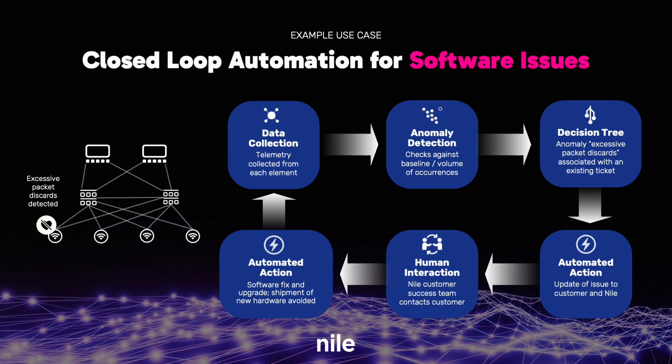The customer success manager then works with the customer to set up a maintenance window to update the access point software. After the access point software is updated with the fix, the digital twin is updated to reflect the latest software in the access point. Detecting the spike in the interface discards, rebooting the access point, attaching the matching ticket, and restoring the network to its original behavior after the upgrade achieves the closed loop automation. This entire process happens in the background without the IT administrator or the end user knowing about it. Now let's go to the demo.